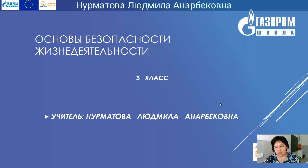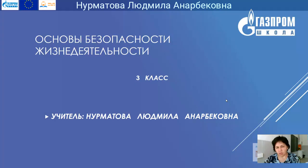Пожалуйста, приготовьте, если у кого-то есть общая тетрадь 24 листа, приготовьте её, подпишите, что это будет тетрадь ОБЖ. Если у кого-то нет, можете взять тоненькую тетрадь в клетку. Все тетради должны быть в клетку, потому что мы будем записывать основную информацию, вести конспект. Я хочу, чтобы её хватило на весь учебный год, и, может быть, даже в четвёртом классе она пригодится.